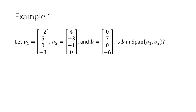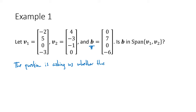Let's attack the first type of problem. You're given a specific vector b and asked: is that vector b in the span of v1 and v2? The first thing we want to do is translate this into a more concrete question. The question is asking us whether the equation x1*v1 + x2*v2 = b has a solution. That's one of the equivalent ways of thinking about 'is b in the span of v1 and v2.' Now that we have a vector equation, we can write the augmented matrix for it.